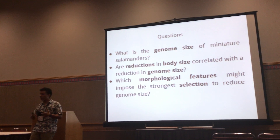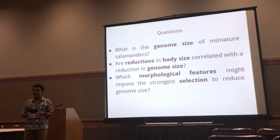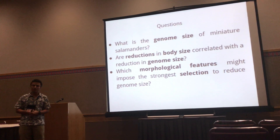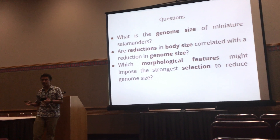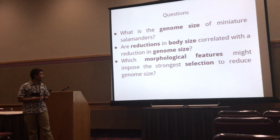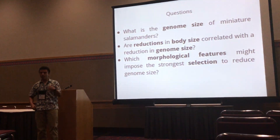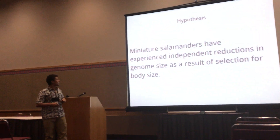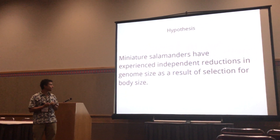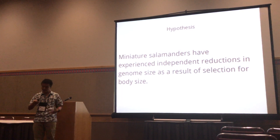That led us to pose the following questions. First, what is the genome size of miniature salamanders? Before this project, there were only about four reports of miniature salamander genome sizes. We wanted to know if reductions in body size were correlated with reductions in genome size, and which morphological features might impose strong selection to reduce genome sizes. Our hypothesis is that miniature salamanders have experienced independent reductions in genome size as a result of selection for body size.